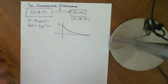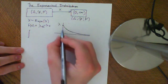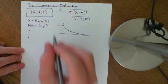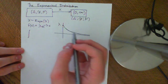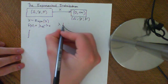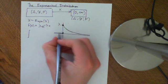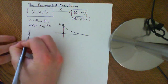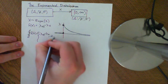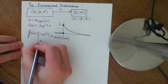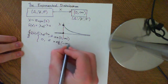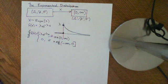Let's make sure that this is a valid PDF. For it to be valid, the area underneath the entire PDF must equal 1. The PDF can be extended to the entire real line: for all negative numbers it's defined to be 0, and at 0 it's also defined to be 0. More properly, the PDF equals lambda e to the negative lambda x if x is an element of the open interval 0 to infinity, and 0 if x is an element of negative infinity to 0, including 0.